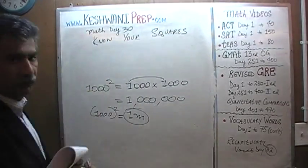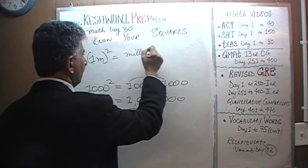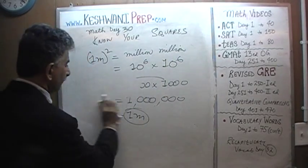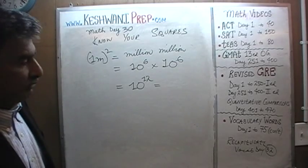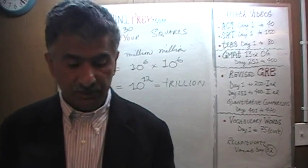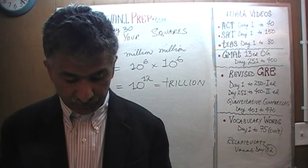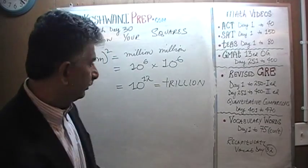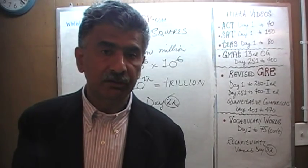One last one — what about a million squared? A million times a million is 10 raised to 6 times 10 raised to 6, which is 10 raised to 12. That is a trillion. As I said, if you have not watched the video that dealt with millions, billions, and trillions — that was day number 22 — make sure you go through these videos in proper sequence.